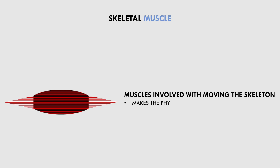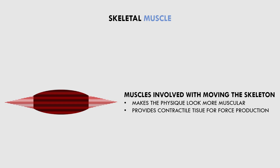Skeletal muscle can significantly increase in size through appropriate training and nutrition interventions, which can make the physique look more muscular and also provide more contractile tissue for force production. Therefore, skeletal muscle is one of the most important variables relating to body composition.